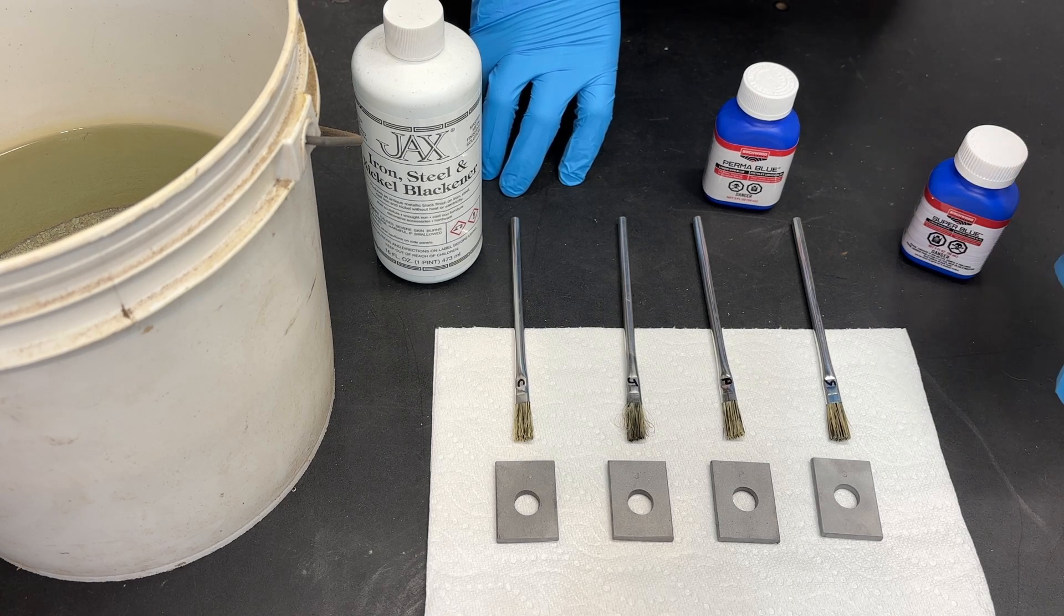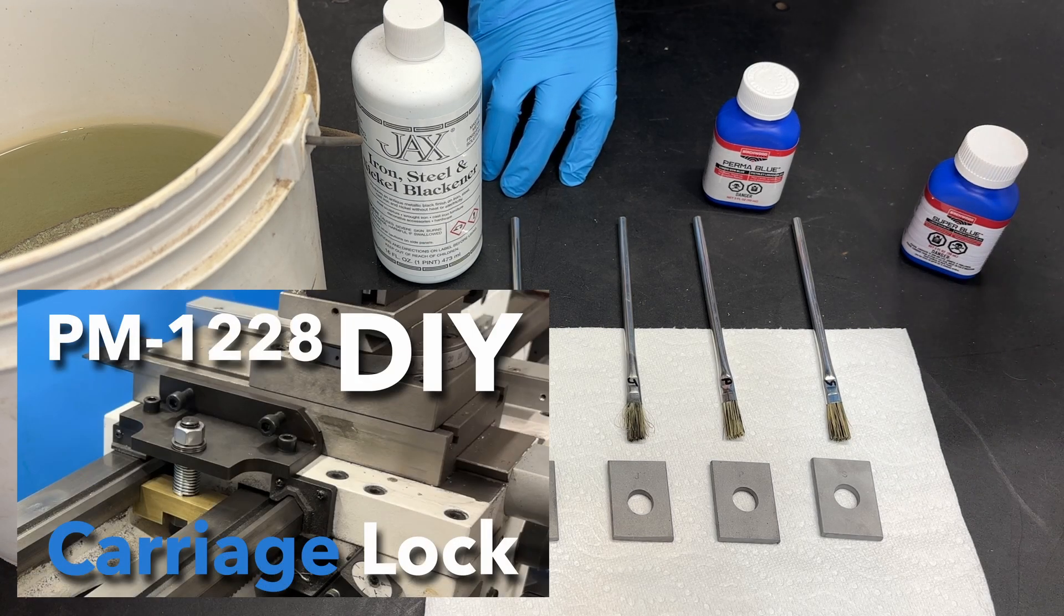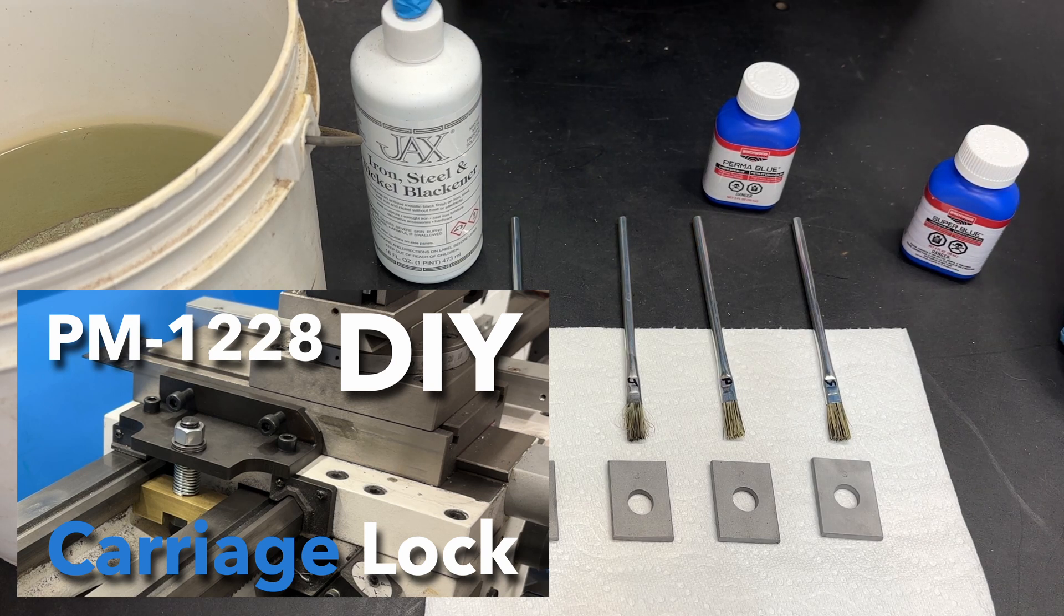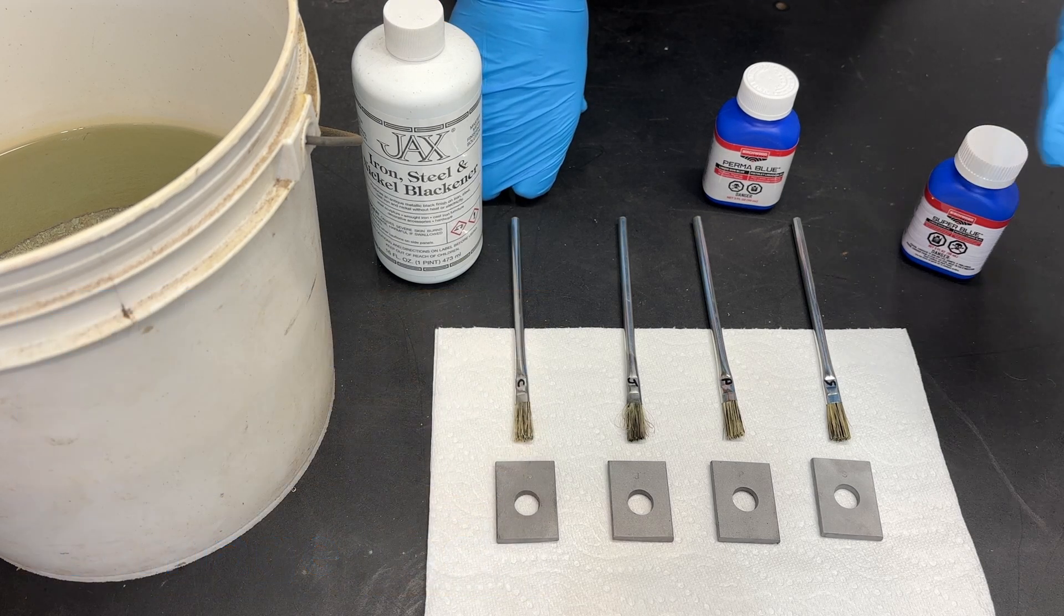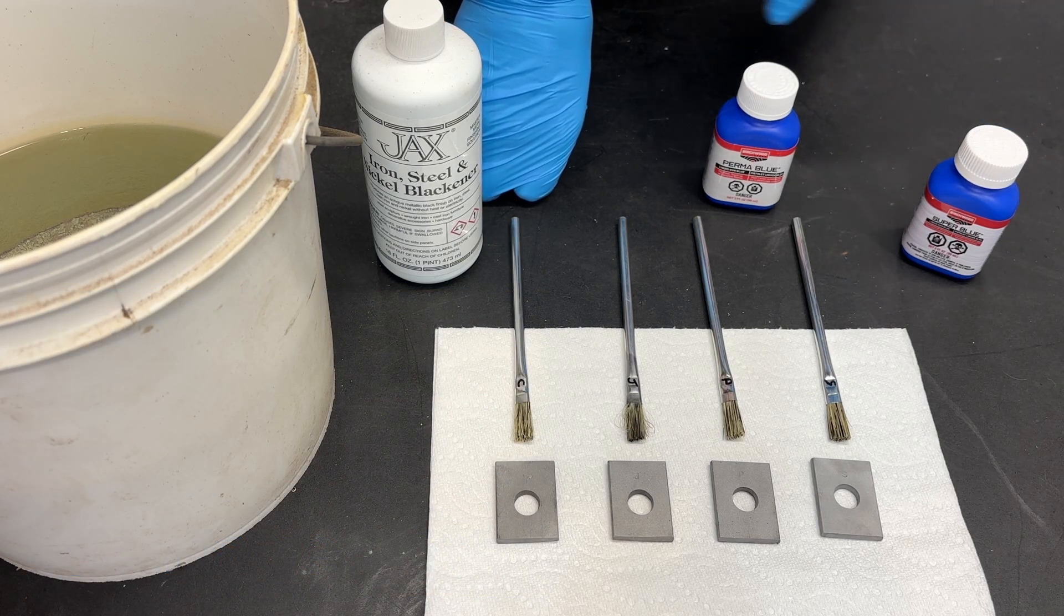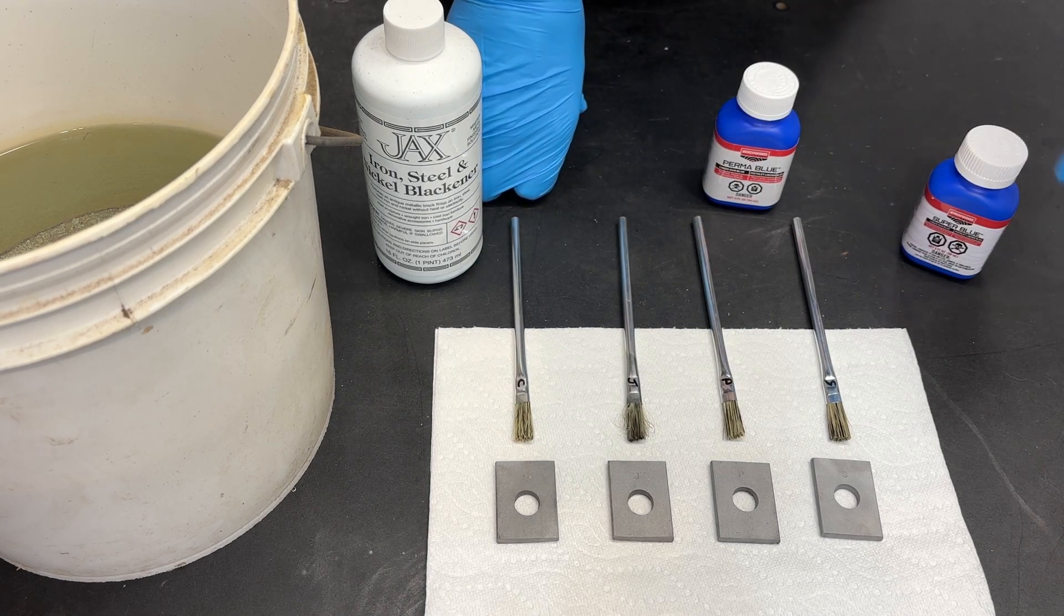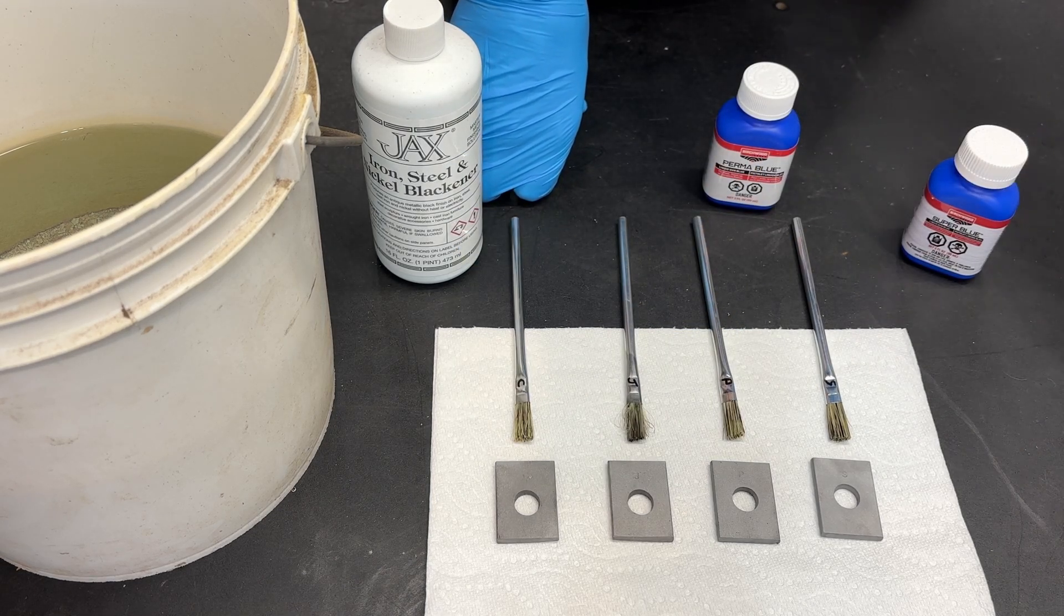I recently made a carriage lock for my PM 1228 and after I machined it I sandblasted it and coated it with this solution right here. It's called JAX. In the past I've used various forms of Perma Blue and then I've also used Caswell's black oxide solution and I've had good results with all of them.